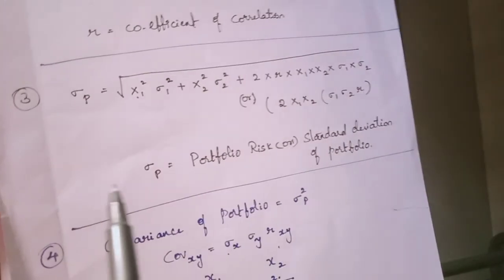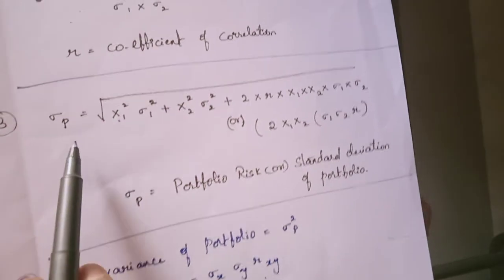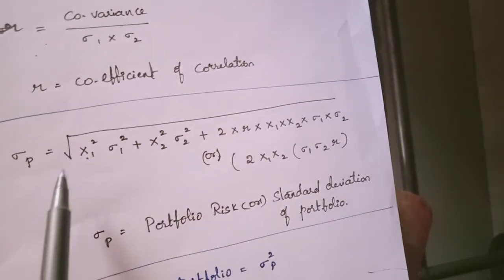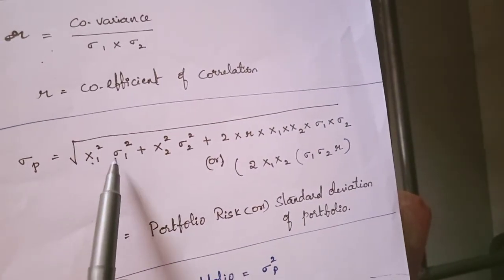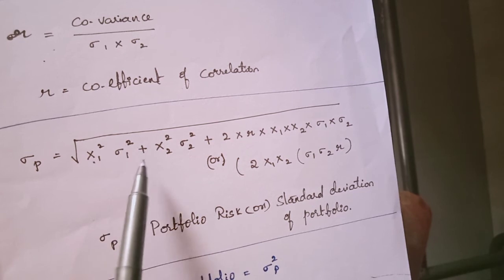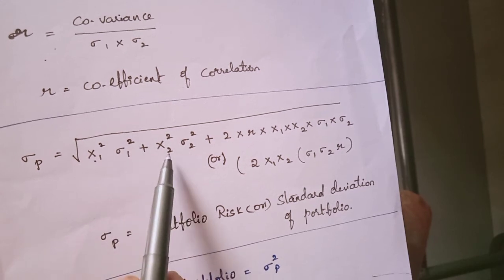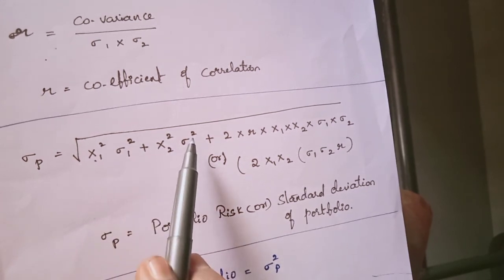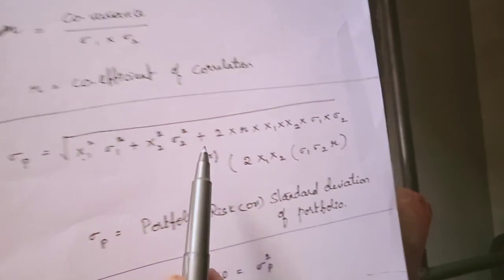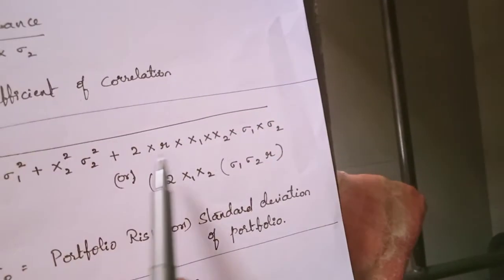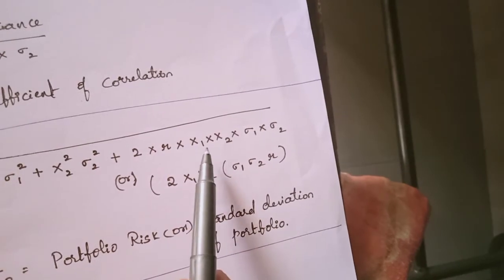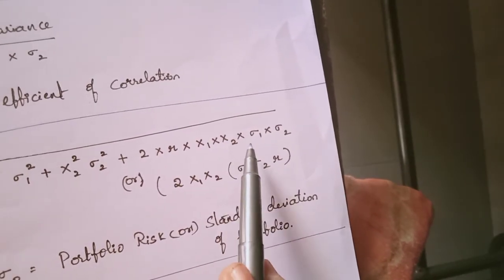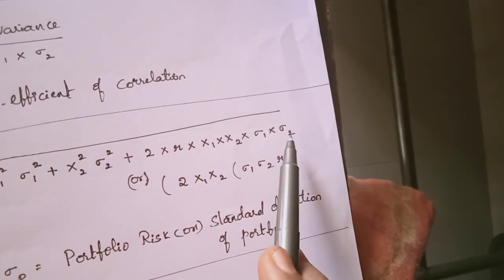Next, coming to the standard deviation: it is the square root of x1 squared into standard deviation 1 squared, plus x2 squared into standard deviation 2 squared, plus 2 into r into x1 into x2 into standard deviation 1 into standard deviation 2.